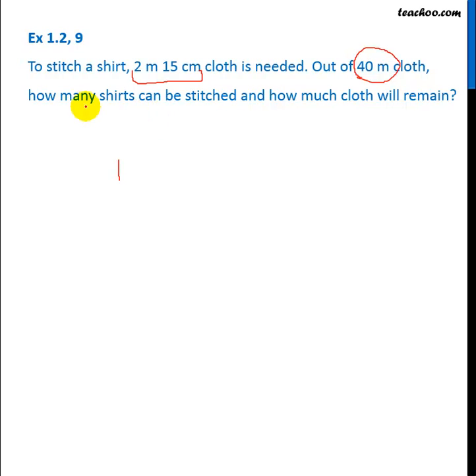We need to find how many shirts can be stitched and we have to find if some cloth is remaining or not. Now one shirt requires this much and total cloth is 40m. So number of shirts will be 40m divided by 2m 15cm.